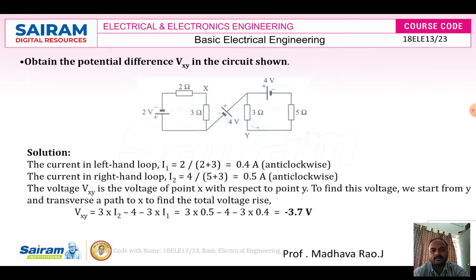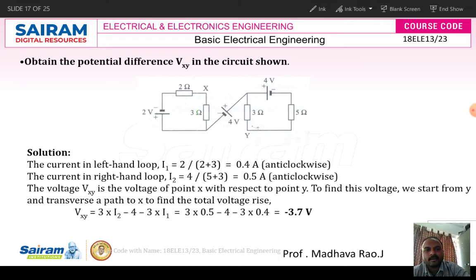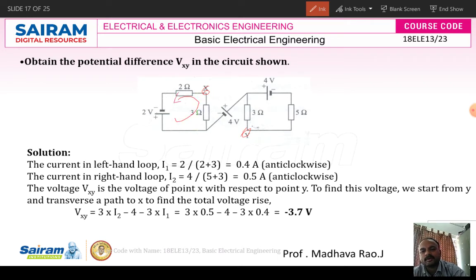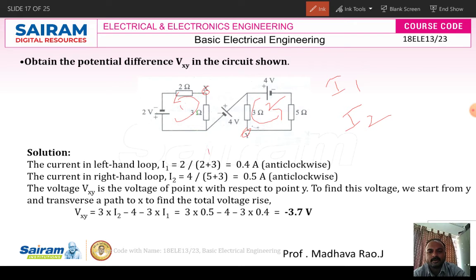Moving to another important problem: we have to find the potential difference V_XY between points X and Y. First, identify the loops. Take loop 1 with current I1 and loop 2 with current I2, and apply KVL. I1 = 2 / (2 + 3) = 0.4 amperes. I2 = 4 / (5 + 3) = 0.5 amperes.